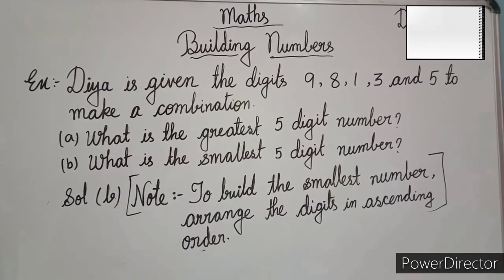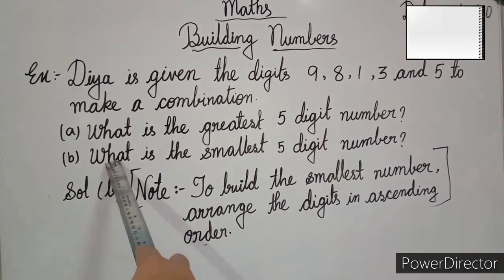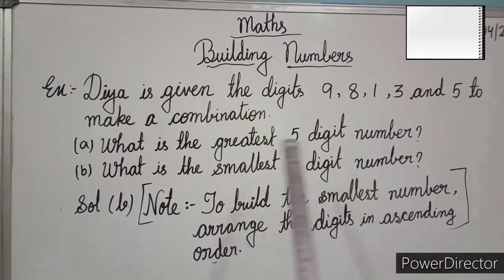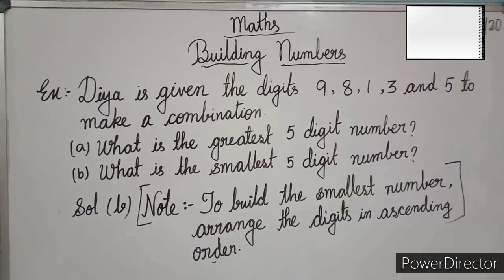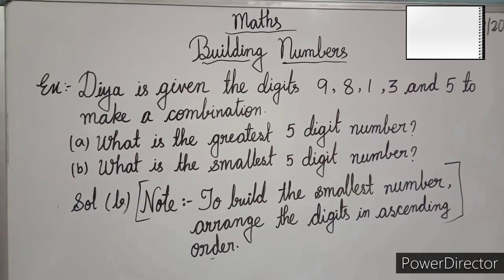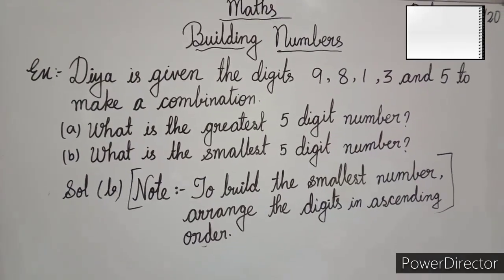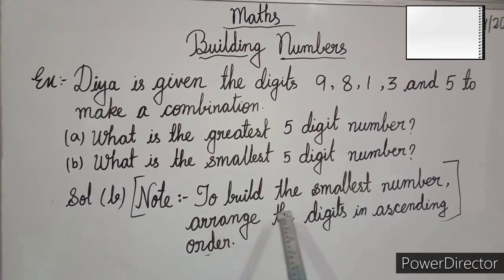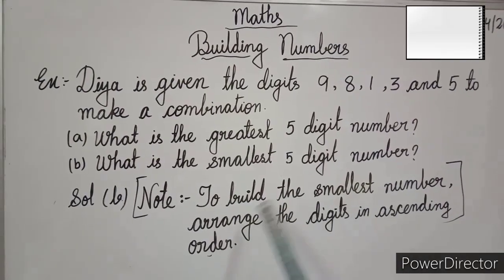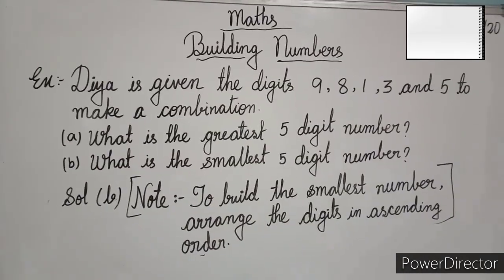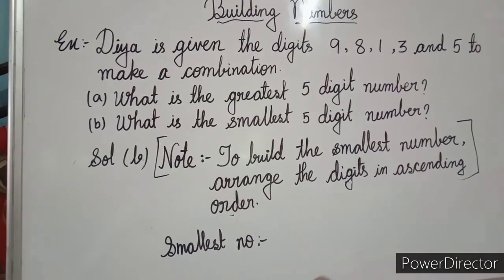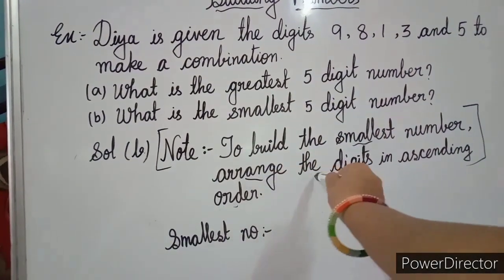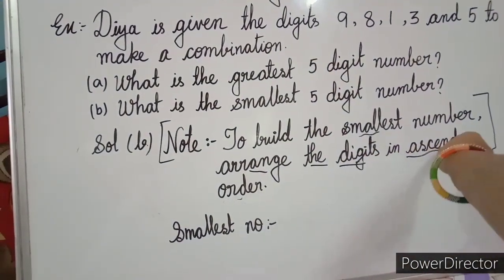Now, the second question is what is the smallest 5 digit number? To find the smallest number, we should remember one thing. Note, to build the smallest number, arrange the digits in ascending order. So we find the smallest number by arranging the digits in ascending order.